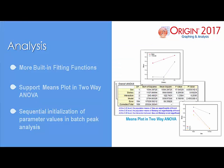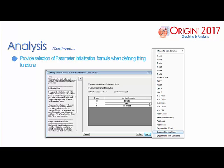In Origin 2017, improvements have been made to built-in analysis tools like non-linear curve fitting, two-way ANOVA, and batch peak analysis. Origin 2017 also provides the ability to select parameter initialization formulas in the fitting function builder, making it easier for users to create their own fitting functions.